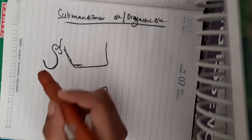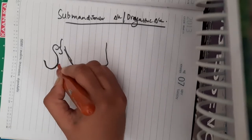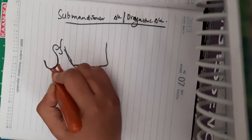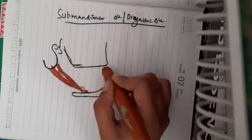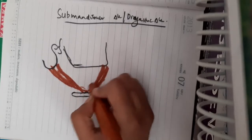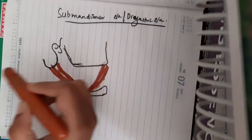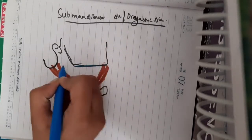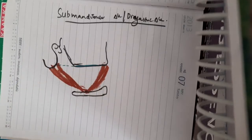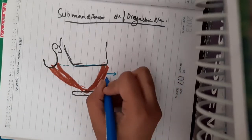The digastric triangle is formed mainly by the digastric muscle. Posteriorly and inferiorly, the triangle is bounded by the posterior belly of the digastric. Anteriorly and inferiorly, it is bounded by the anterior belly of the digastric. The base is formed by the mandible and an imaginary line joining the mandible to the mastoid process.